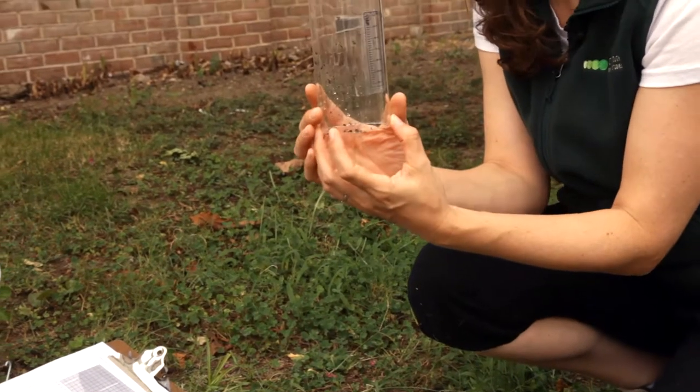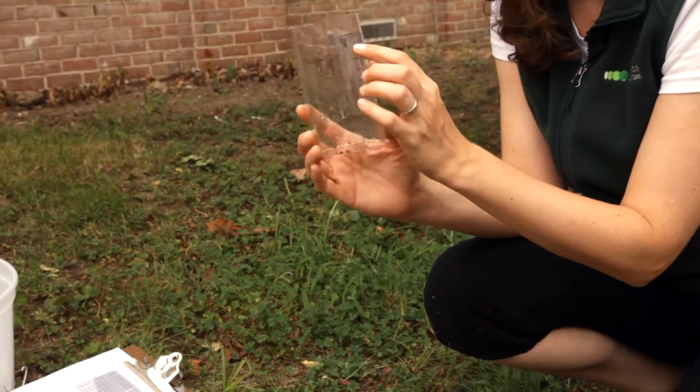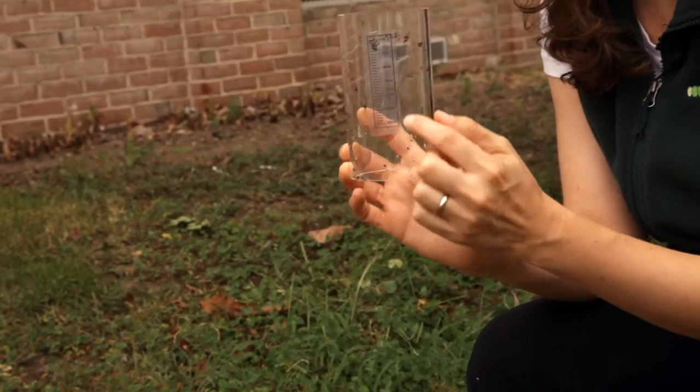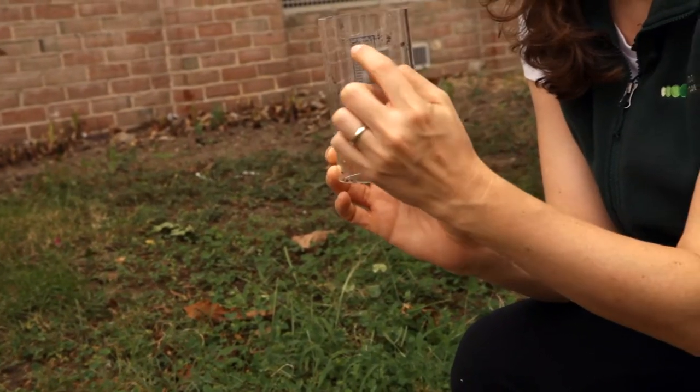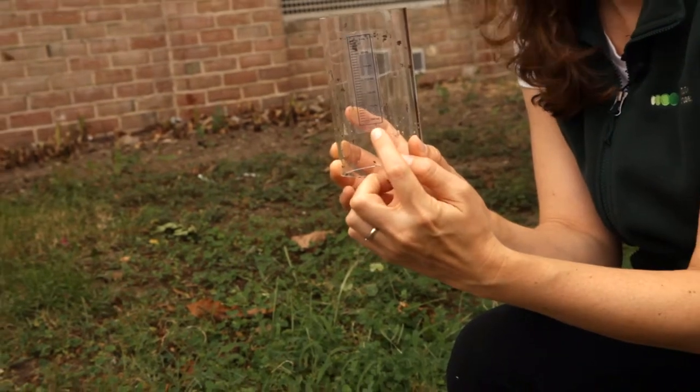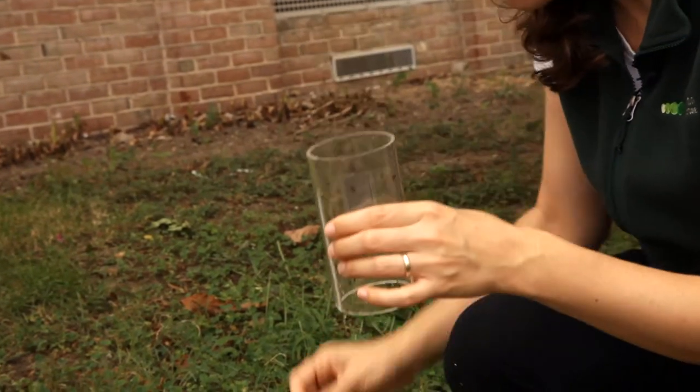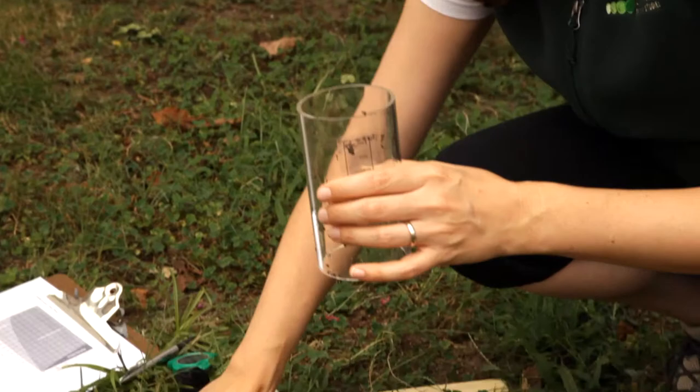What you do is take an infiltrometer, which is just a clear PVC tube, and we've affixed a scale to the outside going from 0 milliliters to 300 milliliters.